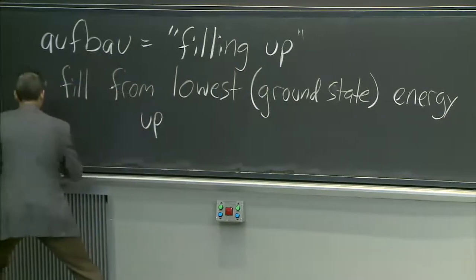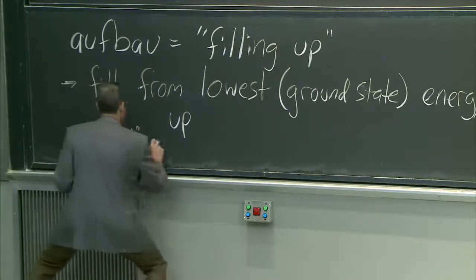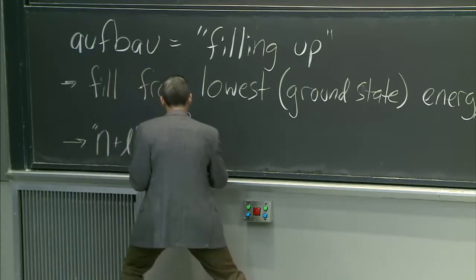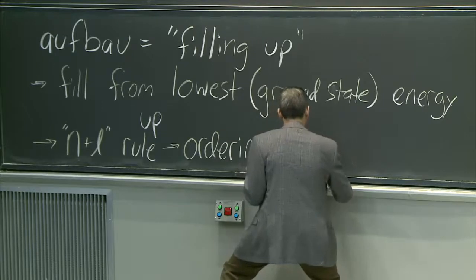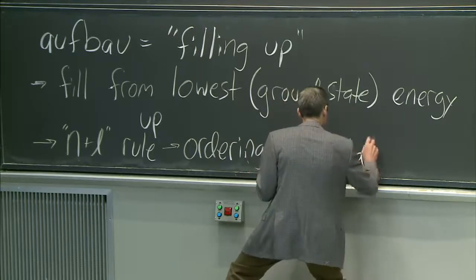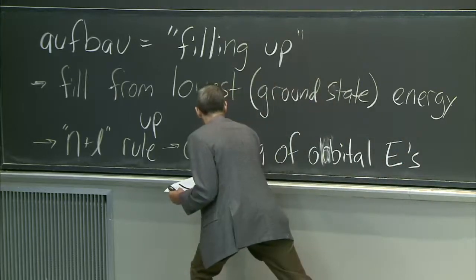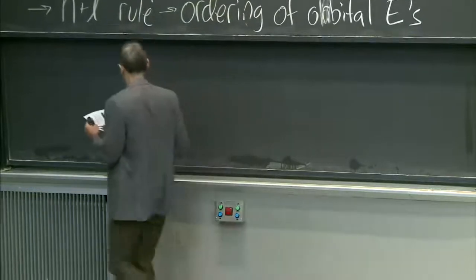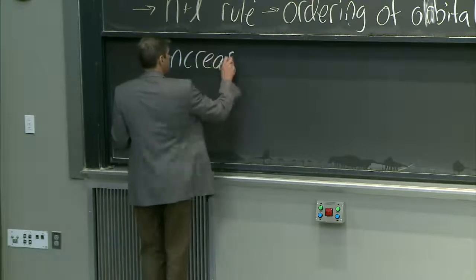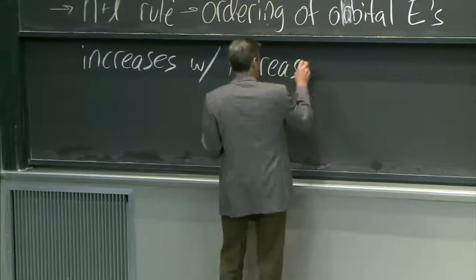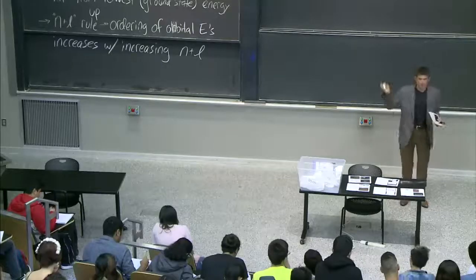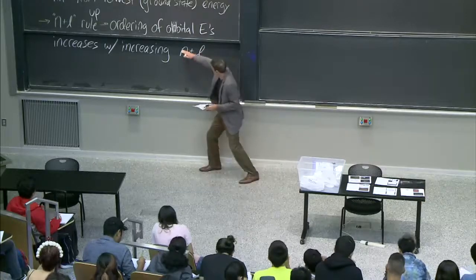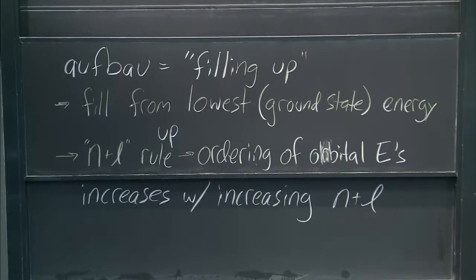You use what is called the n plus l rule. The n plus l rule means that the ordering of the orbital energies increases with increasing n plus l. You fill from the lowest energy up. As n plus l increases — where n is related to the distance from the nucleus and l is related to the shape of the orbital — that's how you fill.